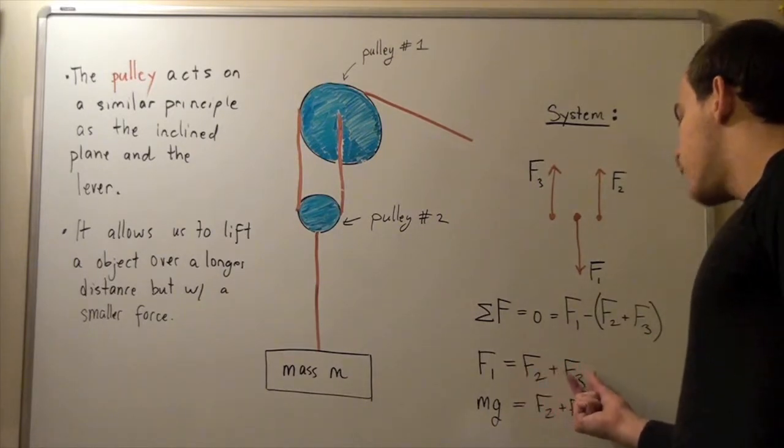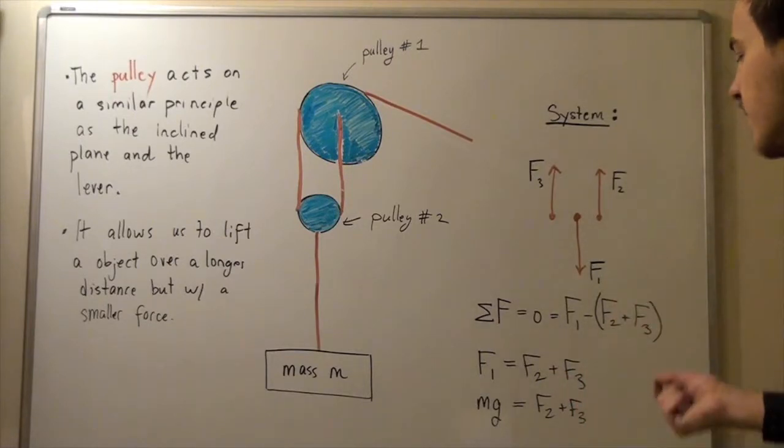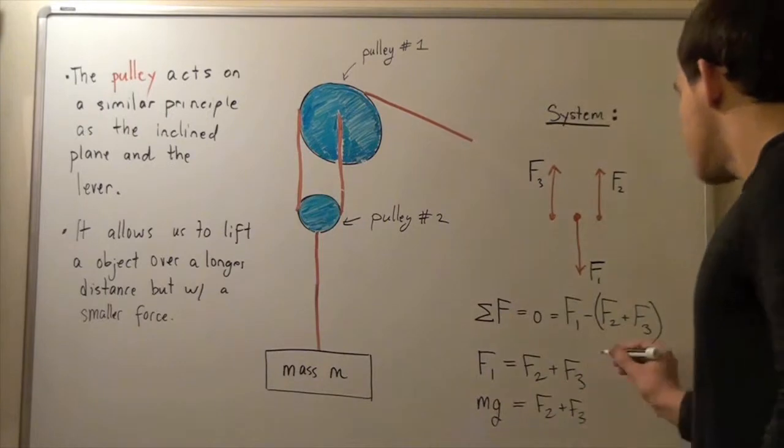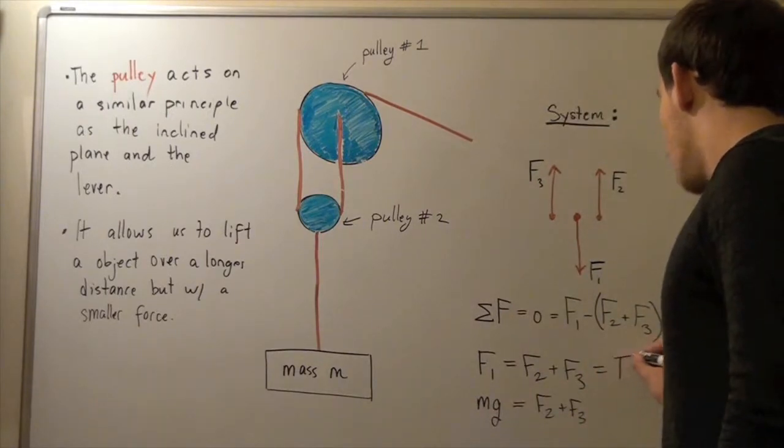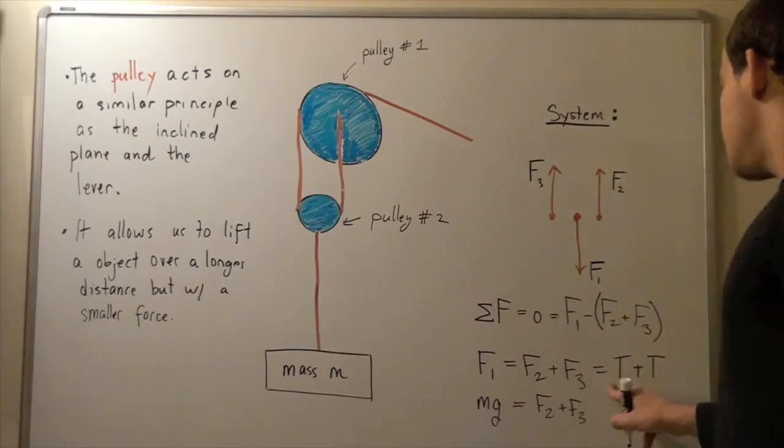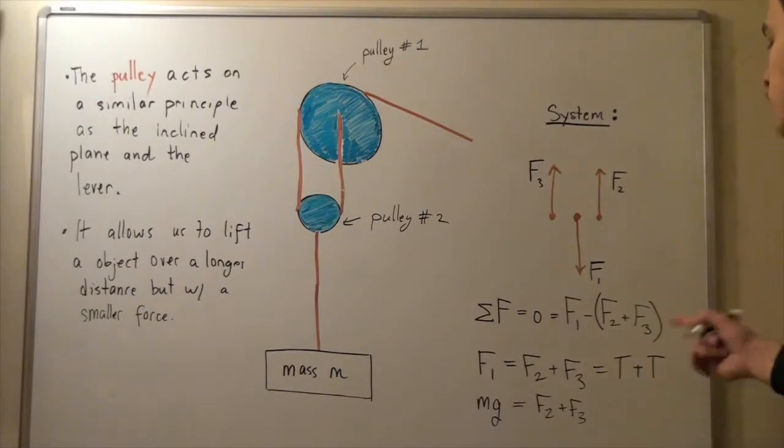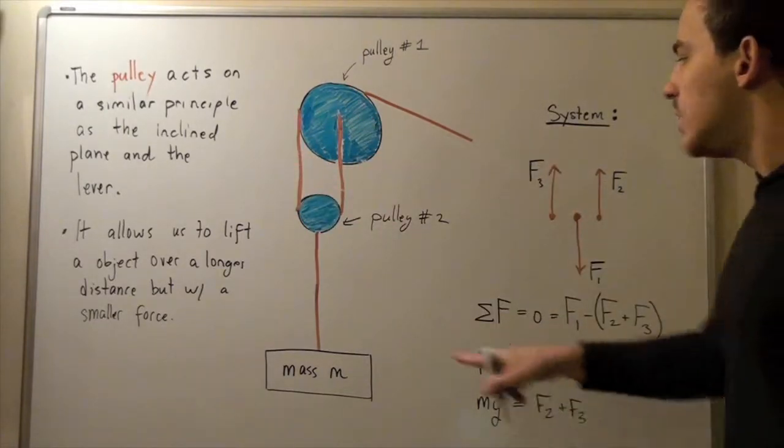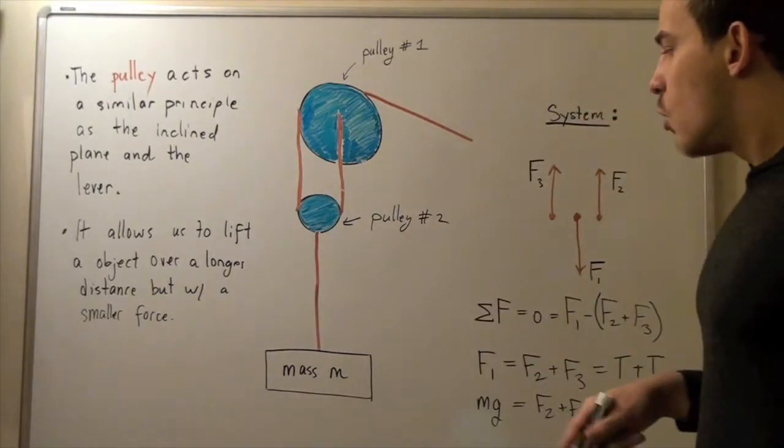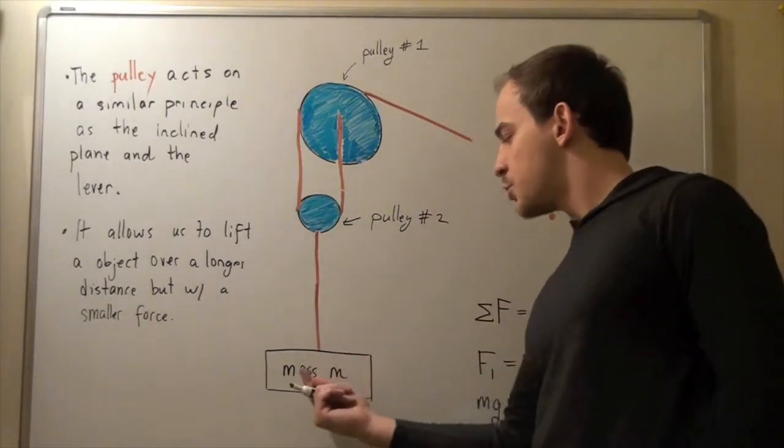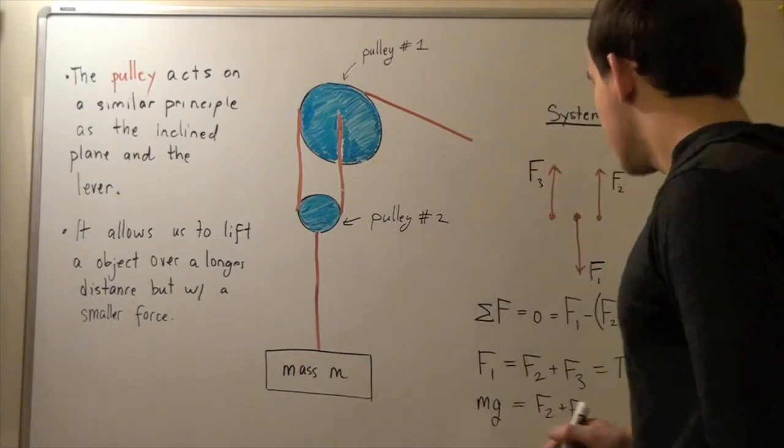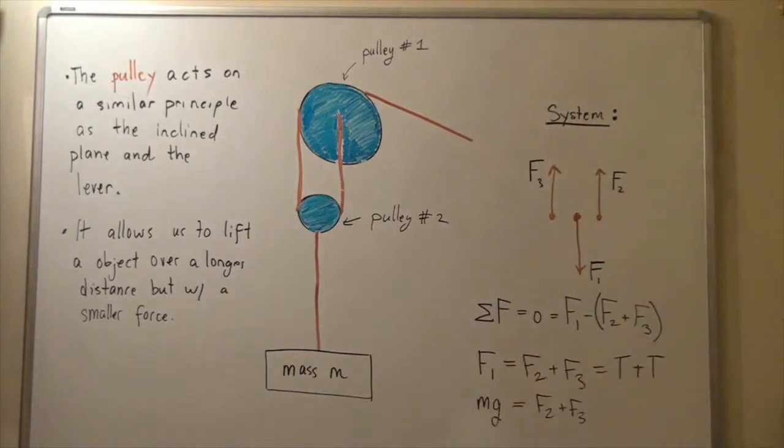So, note that because force one and force two are exactly the same, that means we can replace them with some other force. So let's say that this is T1 and T2 or simply T plus T, where each T represents the force in one of these ropes. So, what's the tension in this rope? Well, since this rope is attached to mass m and the force of gravity is pulling down on this mass, that means force one is simply Mg.